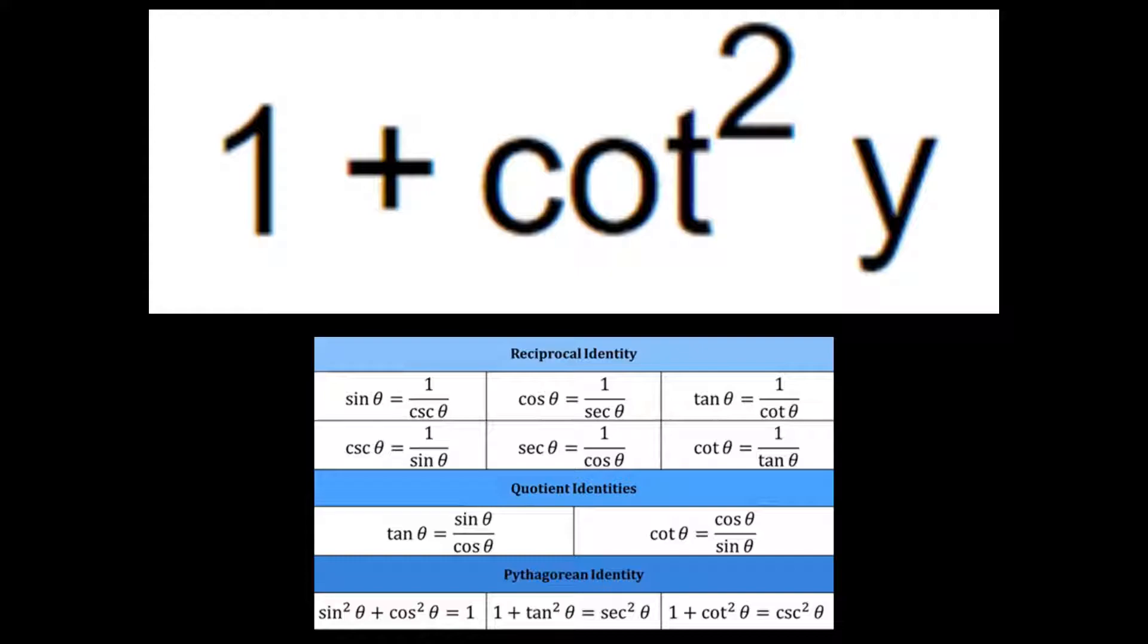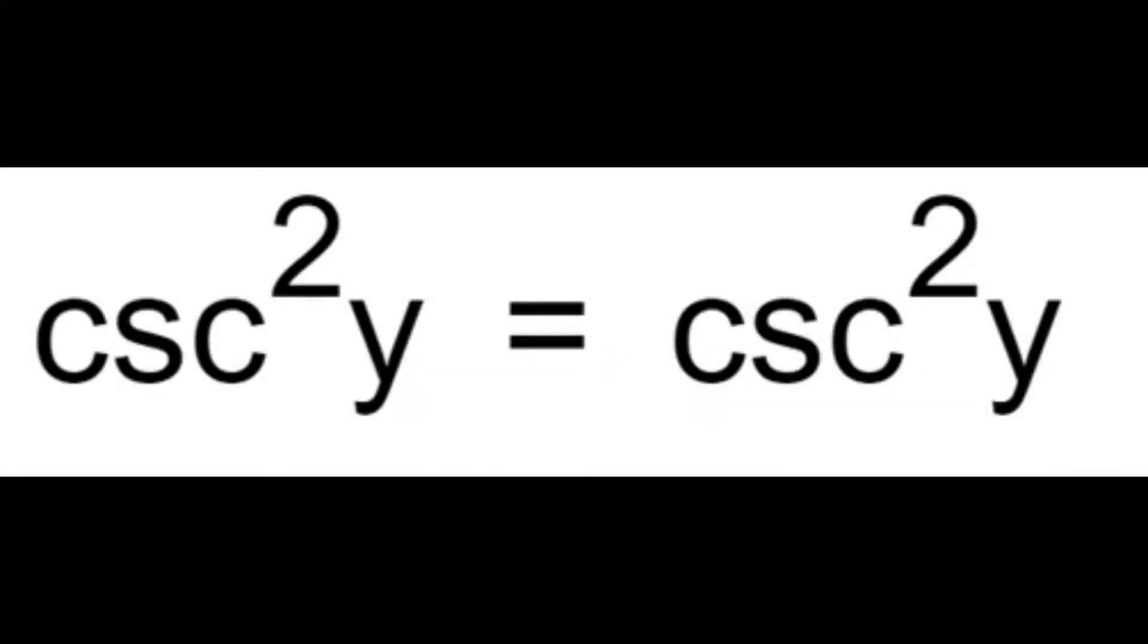One last step. Look at your Pythagorean identity and what is 1 plus cotangent squared y equal to? I mean, the answer is literally right there. It is equal to cosecant squared y. And there you have it. Write it down. Cosecant squared y is equal to cosecant squared y. Congratulations! You proved it! Let's give you a round of applause. See how simple that was? Just take it step by step.